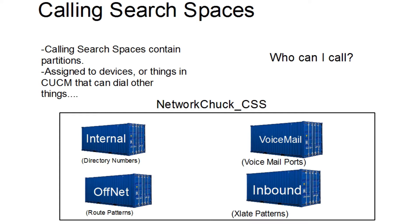Whereas calling search spaces say: who can I call? Now here are calling search spaces. In the simplest terms, calling search spaces are groups of partitions. So while partitions group or contain directory numbers, route patterns, translation patterns — calling search spaces contain partitions. You assign partitions to calling search spaces. Here in my graphic, I have the Network Chuck CSS, a calling search space that contains all of these partitions. This tells whatever device the CSS is assigned to which numbers, translation patterns, and ports it can dial.